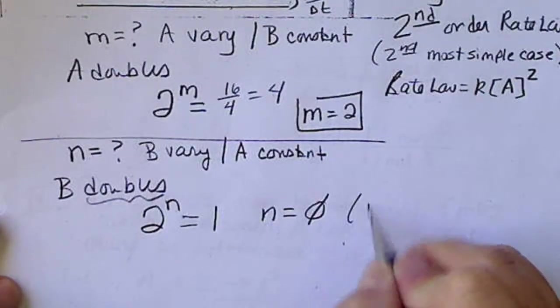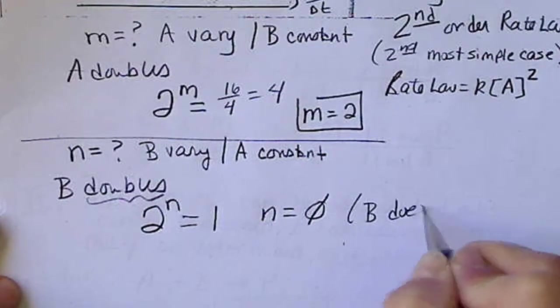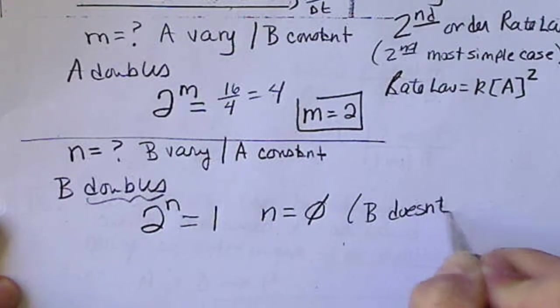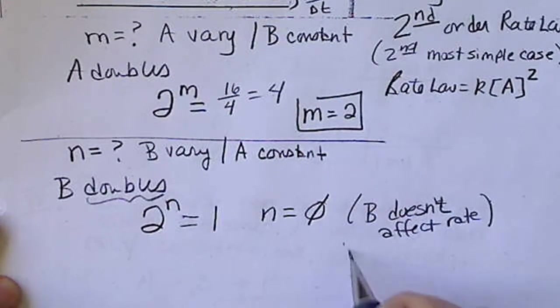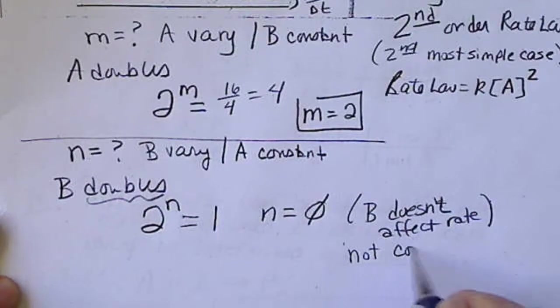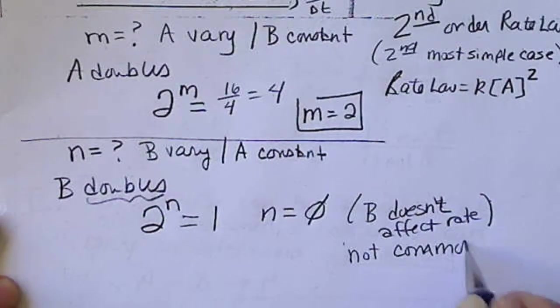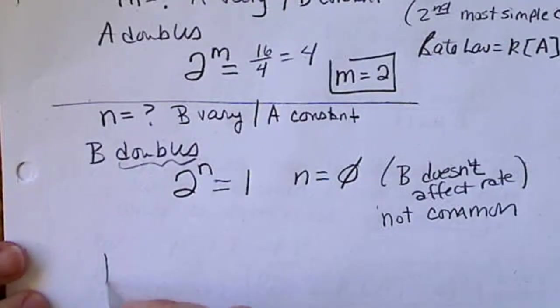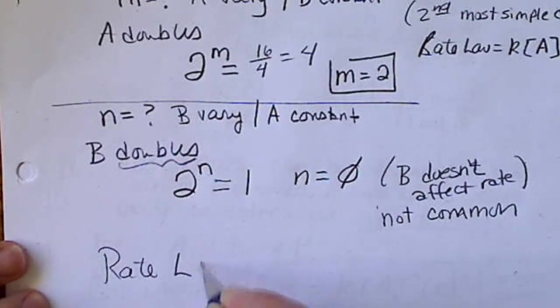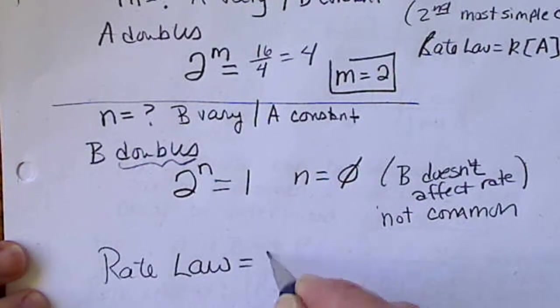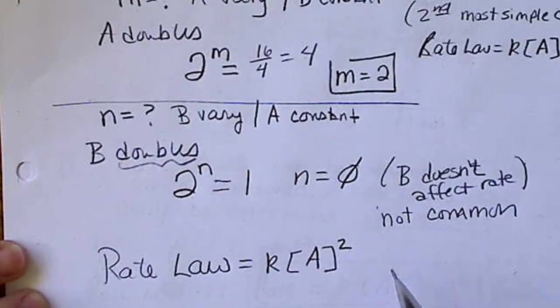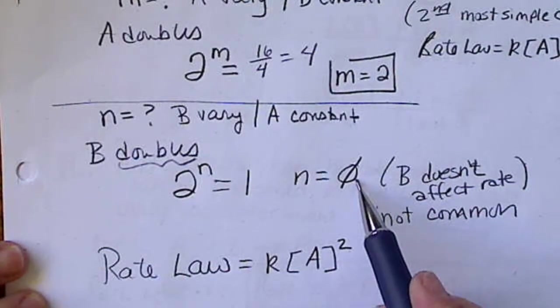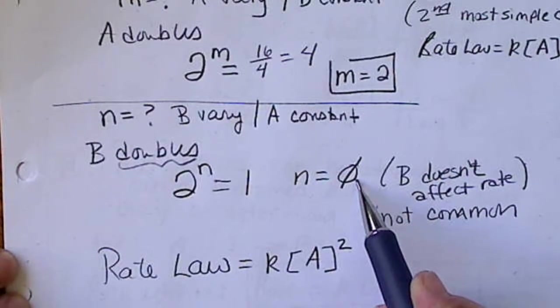So, N here equals 0. So, that means B does not affect, doesn't affect the rate. This is not common, but it can occur.